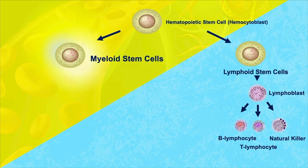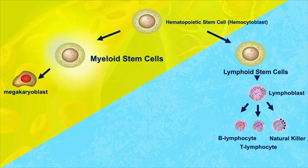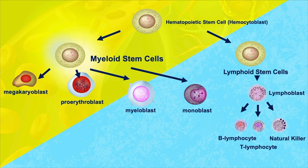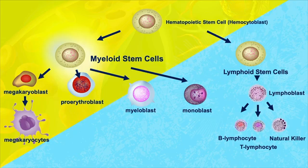Now let's step back and look at the myeloid stem cells. Just as a quick reminder, we started with a hemopoietic stem cell that could differentiate either to a lymphoid stem cell or a myeloid stem cell. The myeloid stem cell can differentiate into one of four cell types: the megakaryoblast, the pro-erythroblast, the myeloblast, and the monoblast. The megakaryoblast will differentiate to become a large cell called a megakaryocyte — think mega, large. Once these megakaryocytes fully mature, they will produce the platelets, the fragments involved in blood clotting, so that you don't bleed to death when you get a cut.